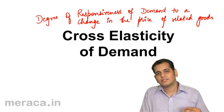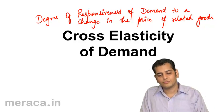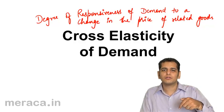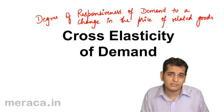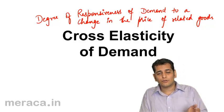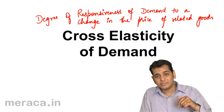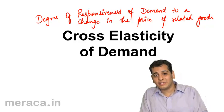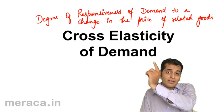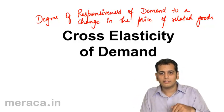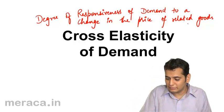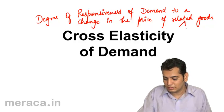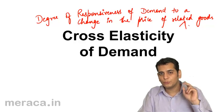Price elasticity is the degree of responsiveness of demand to a change in the price of the same good — that is, the good that is being considered. However, in cross elasticity we measure the degree of responsiveness of demand to a change in the price of a related good, and not that particular good. Related goods are of two types.